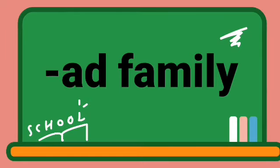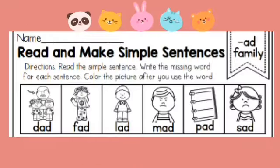Add family. Read and make simple sentences. Directions: Read the simple sentence. Write the missing word for each sentence. Color the picture after you use the word.